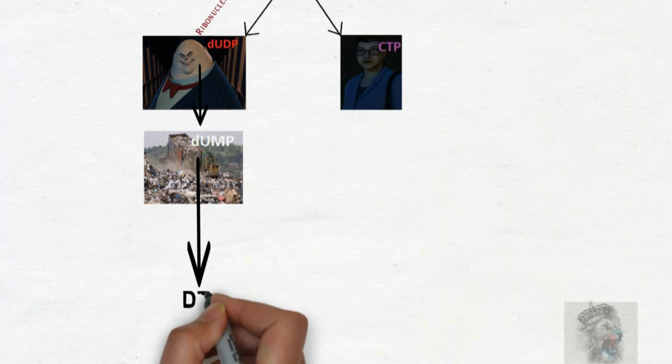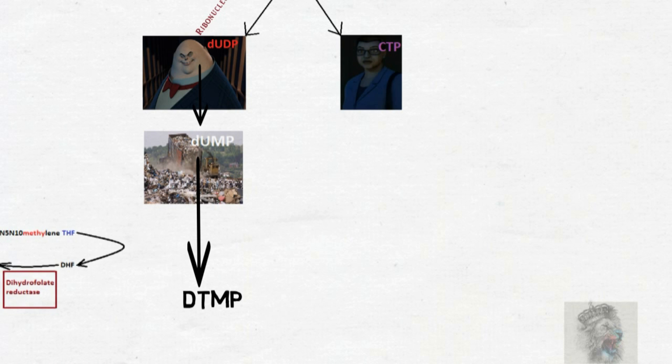Then this dUMP converts into dTMP, deoxythymidine monophosphate. My friends, once dUMP is converted into dTMP, it's very important to know that 5,10-methylene tetrahydrofolate transforms into dihydrofolate and turns into tetrahydrofolate using dihydrofolate reductase, and then thereby tetrahydrofolate returns back as 5,10-methylene tetrahydrofolate.